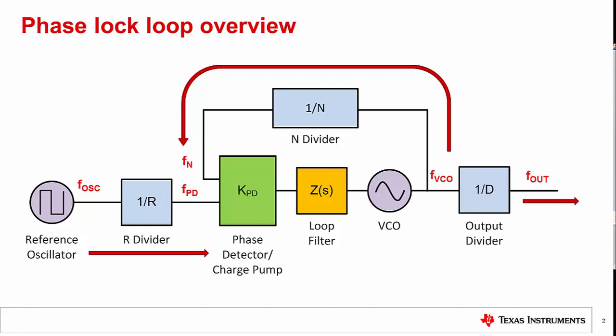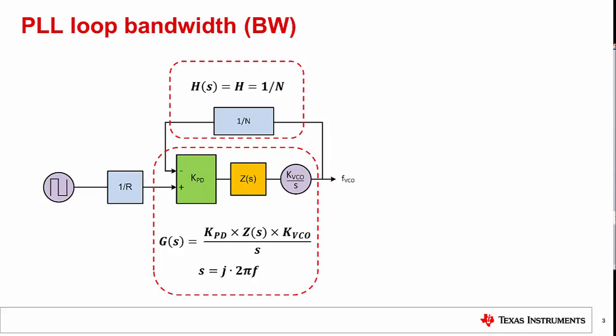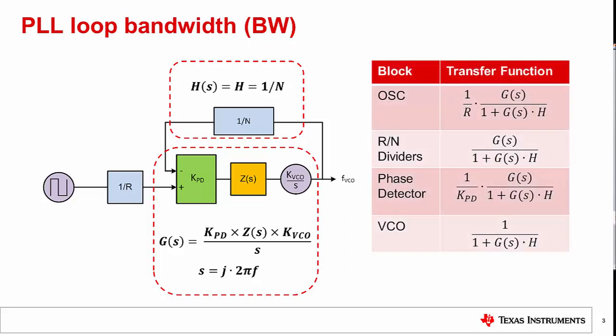Now if you need a refresher on PLL building blocks, take a look at the previous TI Precision Labs videos. In the video on PLL phase noise figure of merit, we talked about the phase noise characteristics of each of the blocks in the PLL and what the transfer functions look like. From the table it is important to note that all the blocks except for the VCO are multiplied by the low-pass transfer function G over 1 plus GH, while the VCO is multiplied by the high-pass transfer function 1 over 1 plus GH.